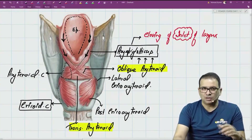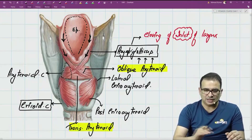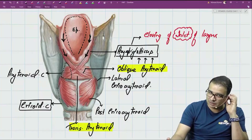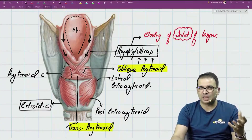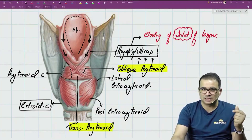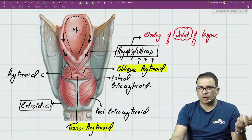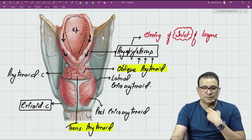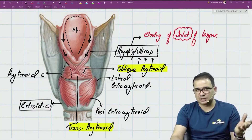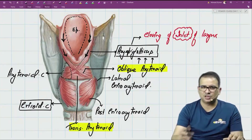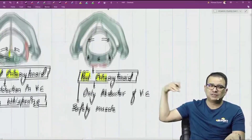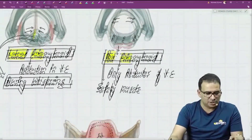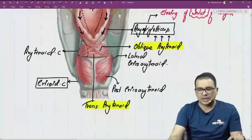That covers the laryngeal muscles in transverse and posterior views, and the actions of all these muscles. Innervation is straightforward — except for the cricothyroid, which is supplied by the external laryngeal nerve, every other muscle of the larynx is supplied by the recurrent laryngeal nerve.